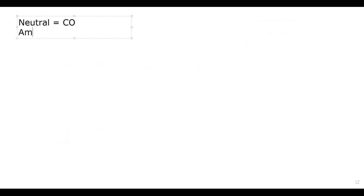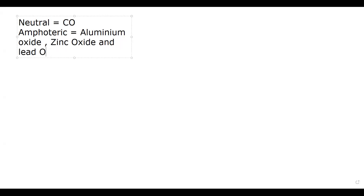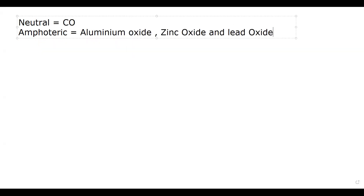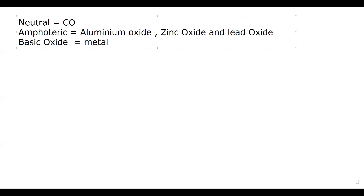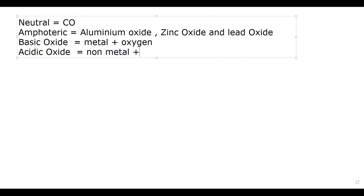To summarize the examples to memorize: for neutral oxide, learn carbon monoxide; for amphoteric oxides, learn three — aluminium oxide, zinc oxide, and lead oxide. For the remaining oxides, if a metal is present with oxygen it is a basic oxide, and if a non-metal is present with oxygen it is an acidic oxide.